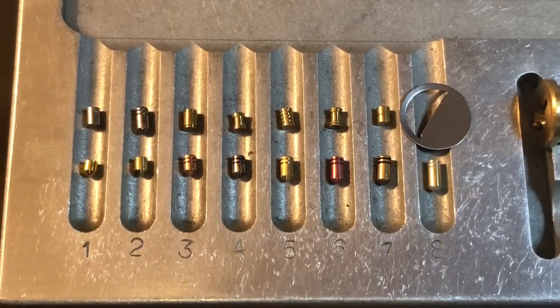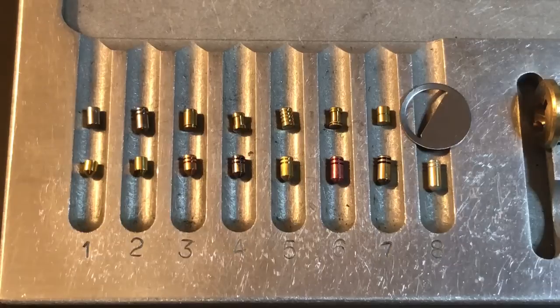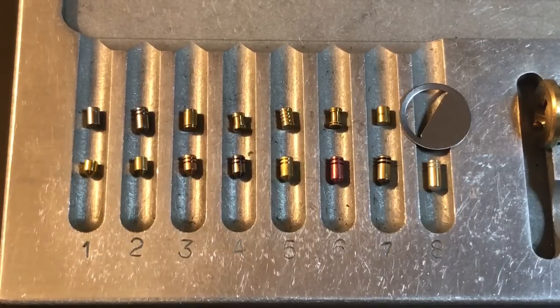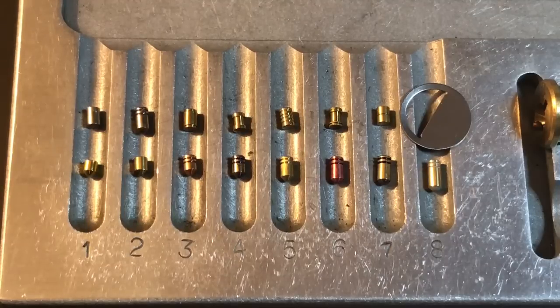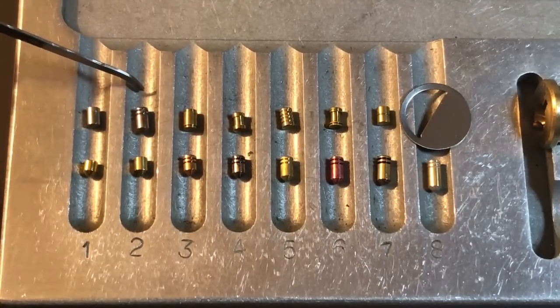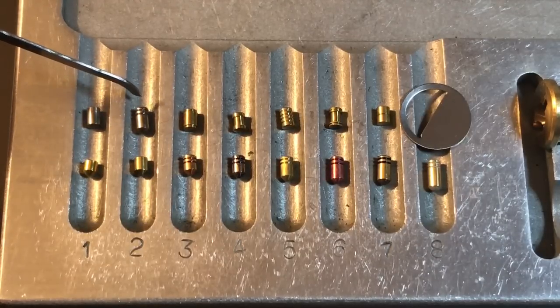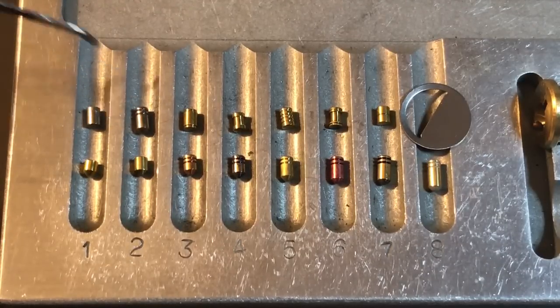Where an anti-drill pin is also a security pin I am going to double those points up. It'll get one point for being an anti-drill pin and one point for being a security pin. So we see in slot 2 we have this steel anti-drill serrated key pin that would get two points for whatever lock it's in.